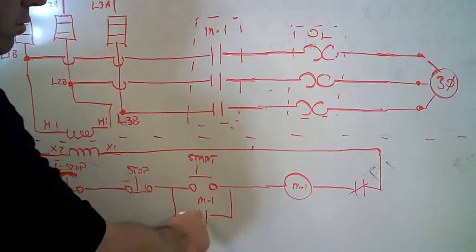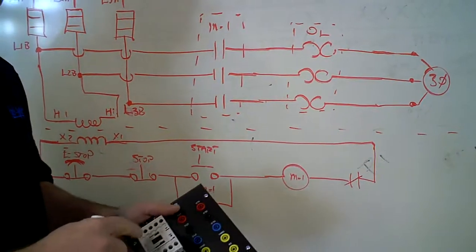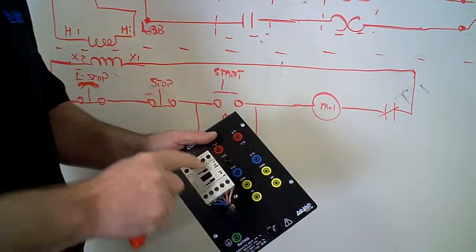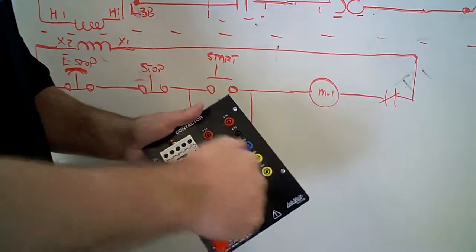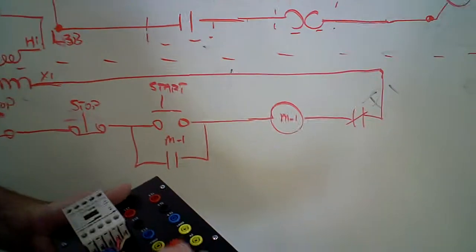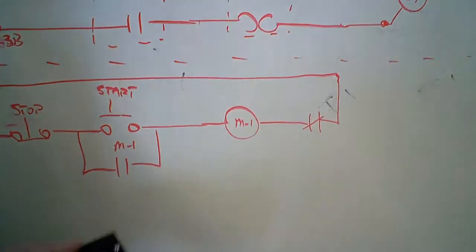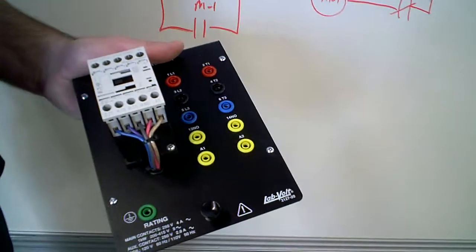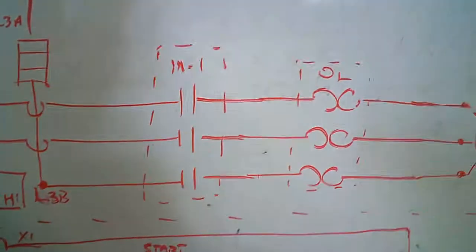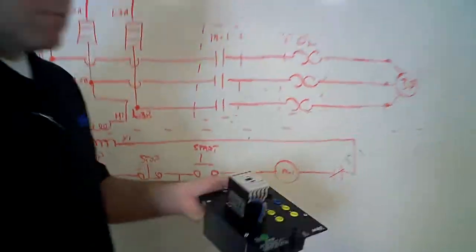These two contacts are auxiliary contacts. They are located on here too. Normally open right here. It's number 13 and 14. So 13 and 14 are those two contacts. And then your coil here, M1 coil, is A1 and A2. So those devices are all on the same physical device.